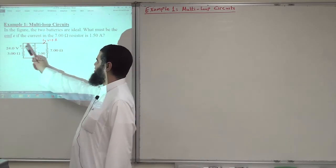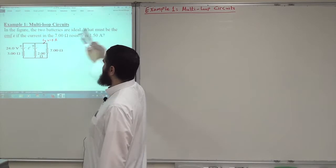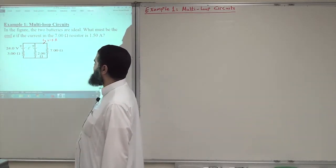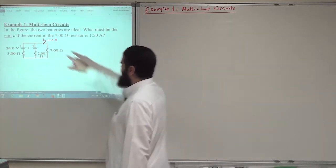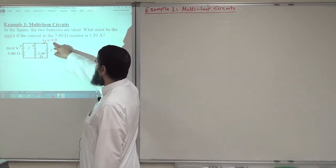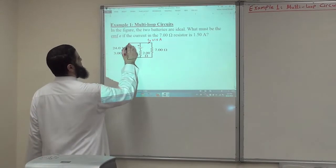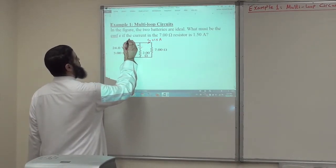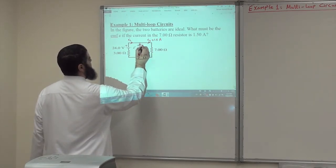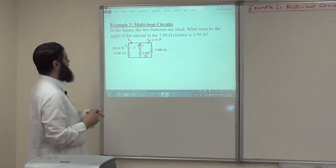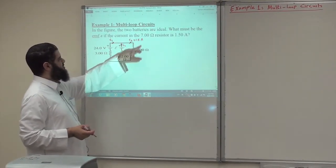One of them is 24 volts. The other one, its EMF, we don't know. What must be the EMF E of this second battery if the current in the 7 ohm resistor is 1.5 ampere? So this current, I call it I3, is 1.5 ampere. The current here is called I1, and at this junction I have I2. So I1 is unknown, I2 is unknown, and I3 is given to be 1.5 ampere.